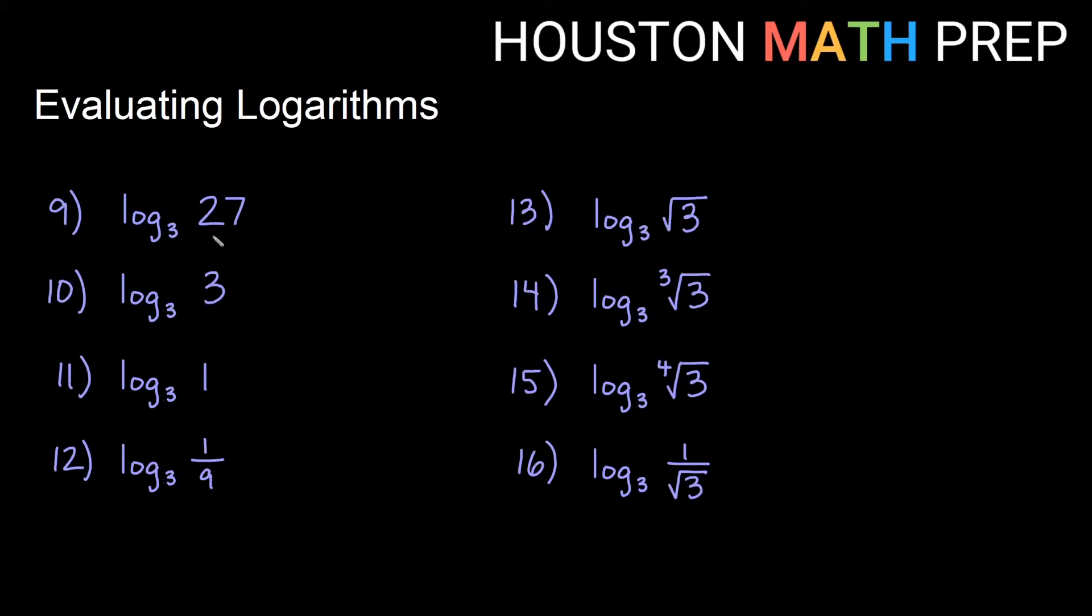Let's look at several more now with base 3. Log base 3 of 27 says 3 to what power gives me this number? 3 cubed gives us 27. 3 to what power gives me 3? 3 to the first power. 3 to what power gives me 1? Just like log base 5 of 1, log base 3 of 1 is 0. 3 to the 0 is 1.